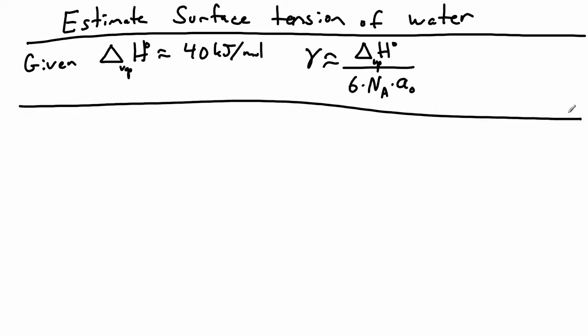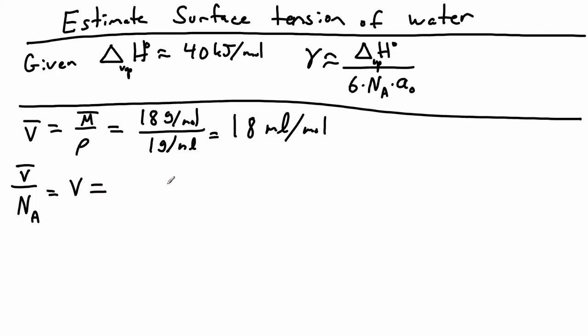We know that the molar volume of water is equal to the molar mass divided by the density. So we have 18 grams per mole divided by one gram per mil, so we have 18 mils per one mole of water. We could convert that to a molecular level by dividing by Avogadro's number. So the volume of a single water molecule: we get 18 mils per mole, and let's go ahead and just convert that right away to SI units.